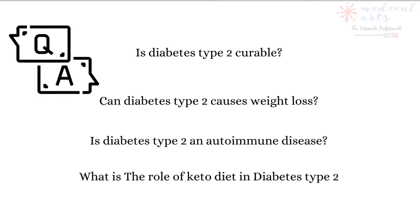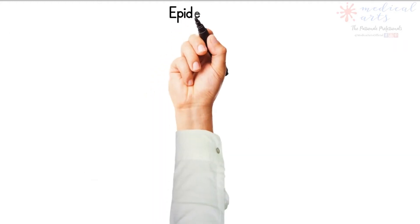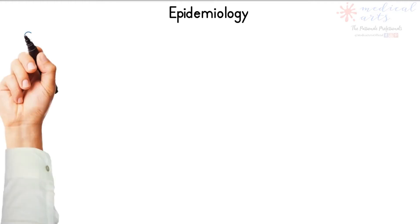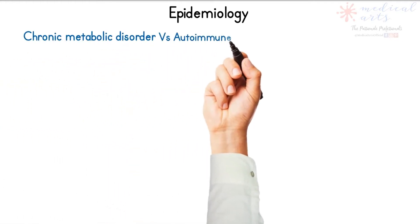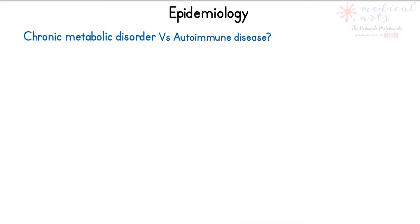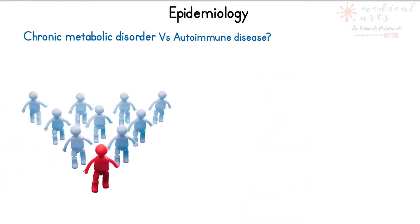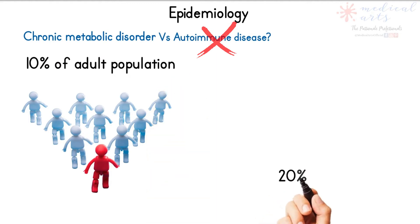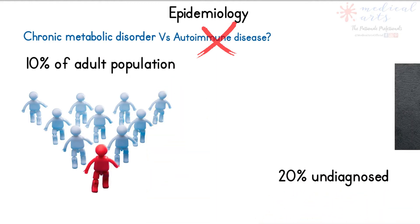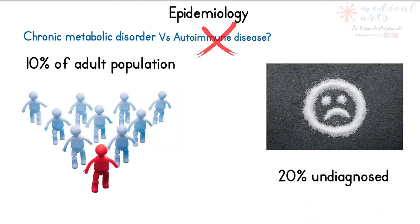By watching till the end, you will find the answers to the most common questions about this disease. Diabetes is currently defined as a chronic metabolic disorder characterized by abnormally elevated levels of blood sugar. However, some researchers are starting to point at it as a possible result of an autoimmune disease, though there is no complete evidence to support those claims yet. About 10% of the adult population suffers from diabetes, and 20% of people don't know they have it.